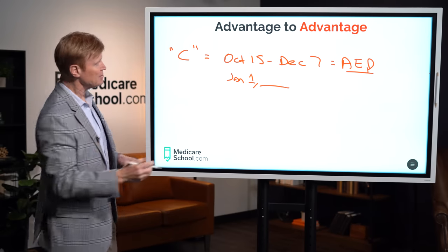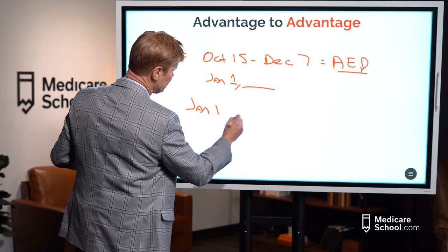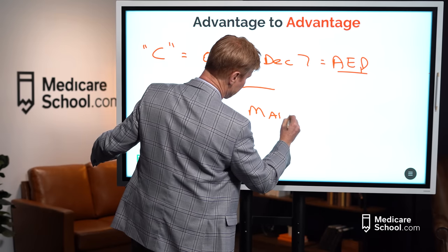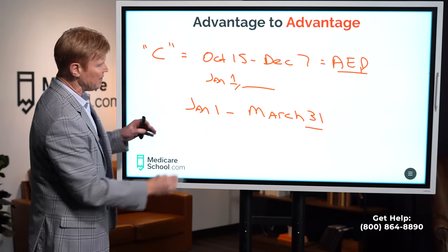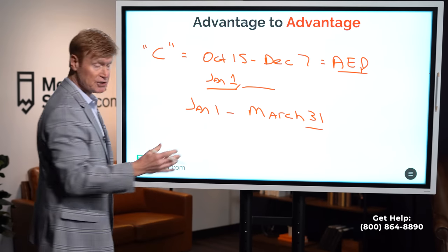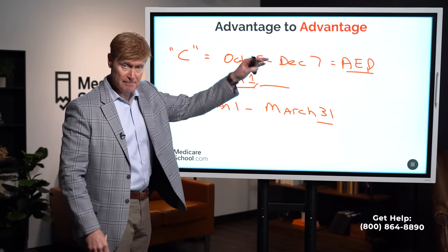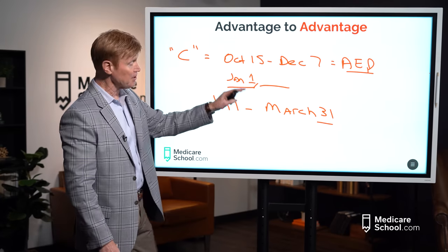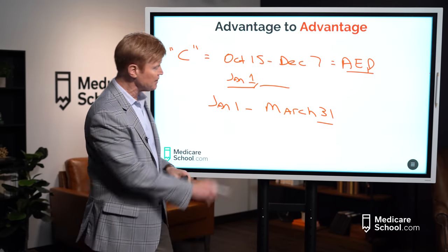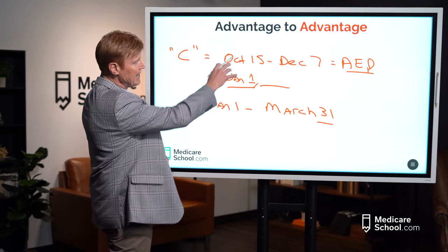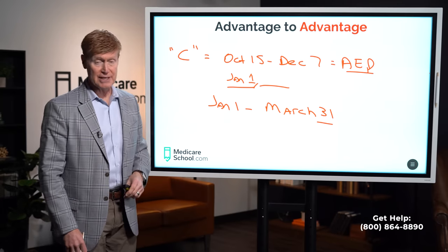The second time frame to switch C plans is January 1 through March 31st. As long as you are on an advantage plan effective January 1, you can switch. If you make the switch in January, the new plan starts in February; switch in February, starts in March; switch in March, starts in April. So we have three months at the start of the year and seven weeks toward the end of the year.